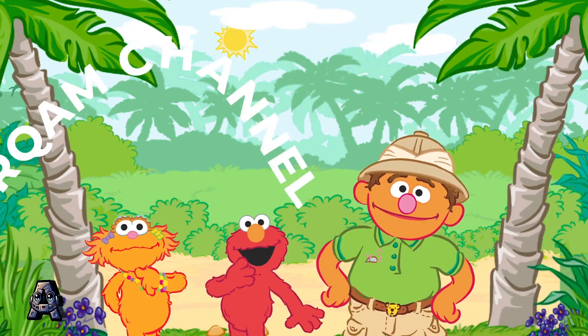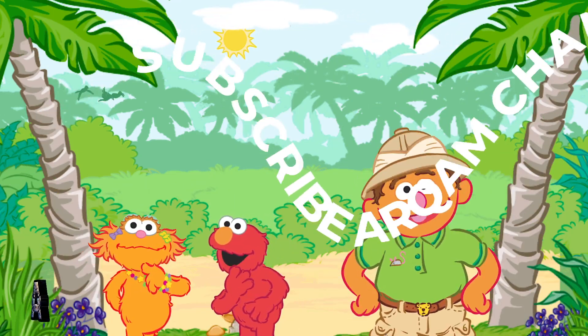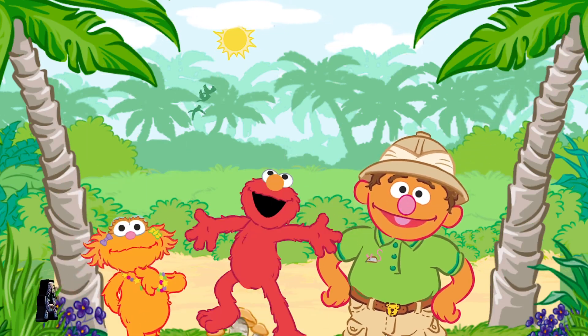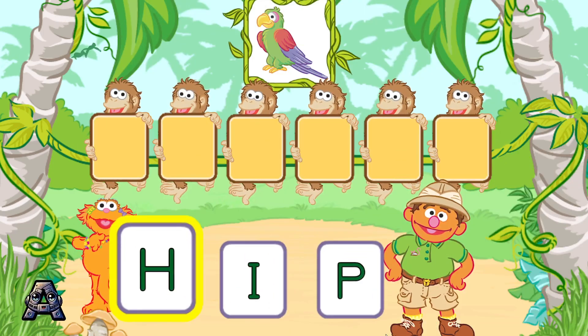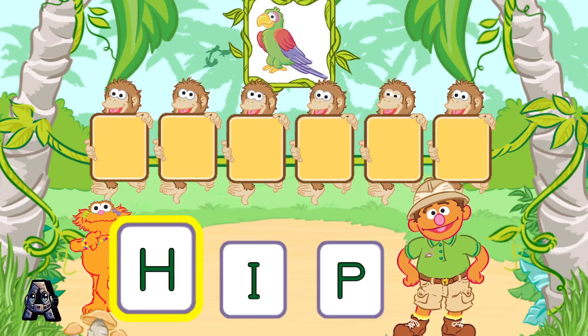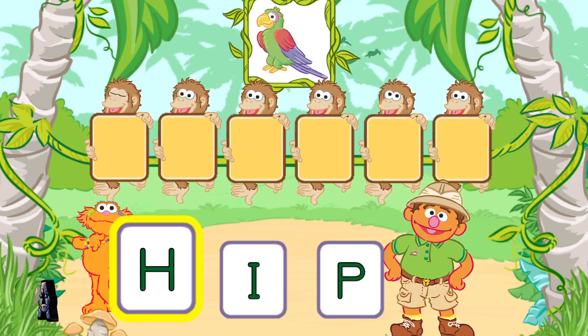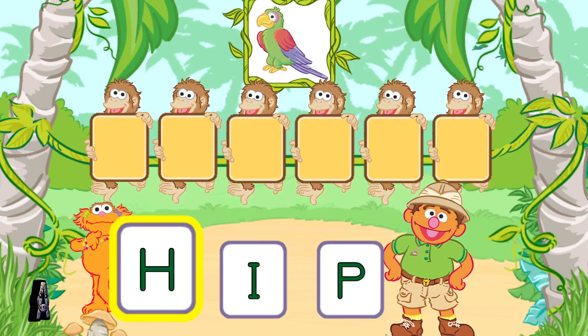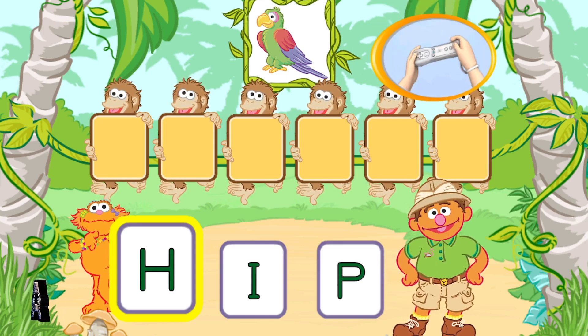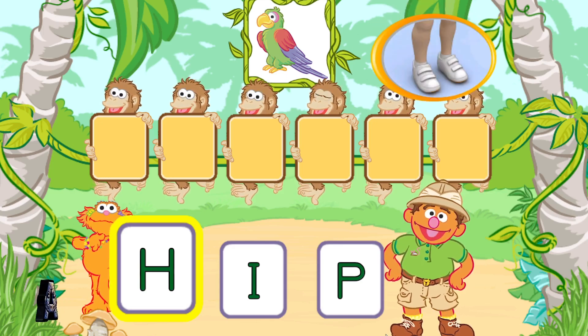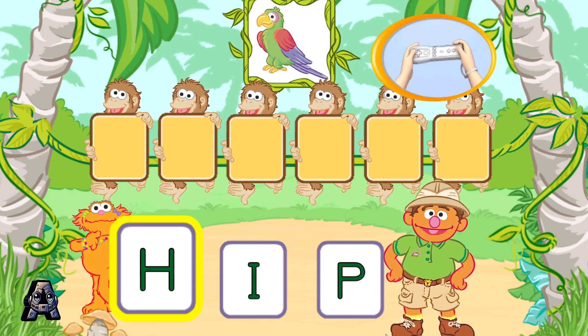Come on, guys. Let's go visit the monkeys. Cool! Yay! Let's put the letters in order to spell words with the monkeys. Let's put these letters in order to spell the word parrot. To pick a letter, tilt your Wii Remote back and forth and then jump.